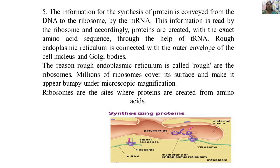The information for protein synthesis is conveyed from DNA to ribosomes by mRNA molecules. This information is read by the ribosome, and proteins are created with the exact amino acid sequence through the help of tRNA. The rough endoplasmic reticulum is connected with the outer envelope of the cell nucleus and with the Golgi bodies. It is called 'rough' because millions of ribosomes cover its surface, making it appear rough and bumpy under microscopic magnification.